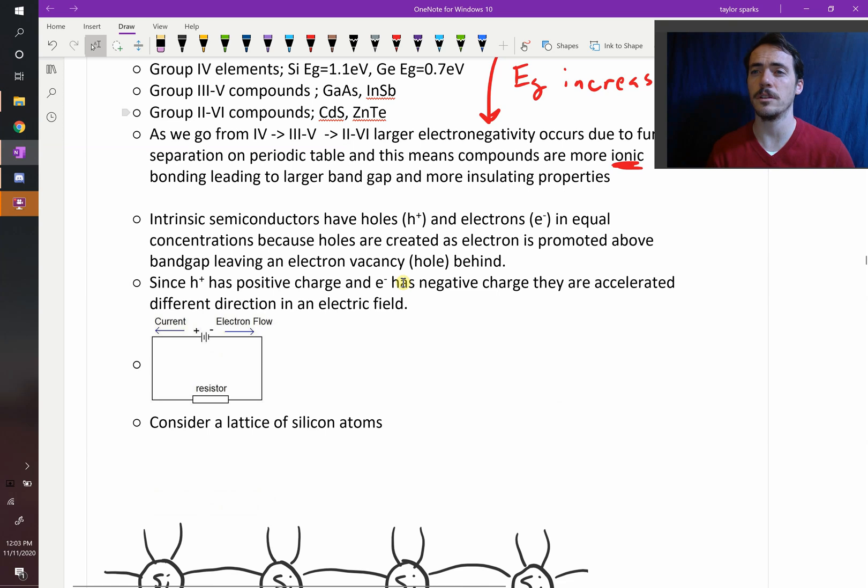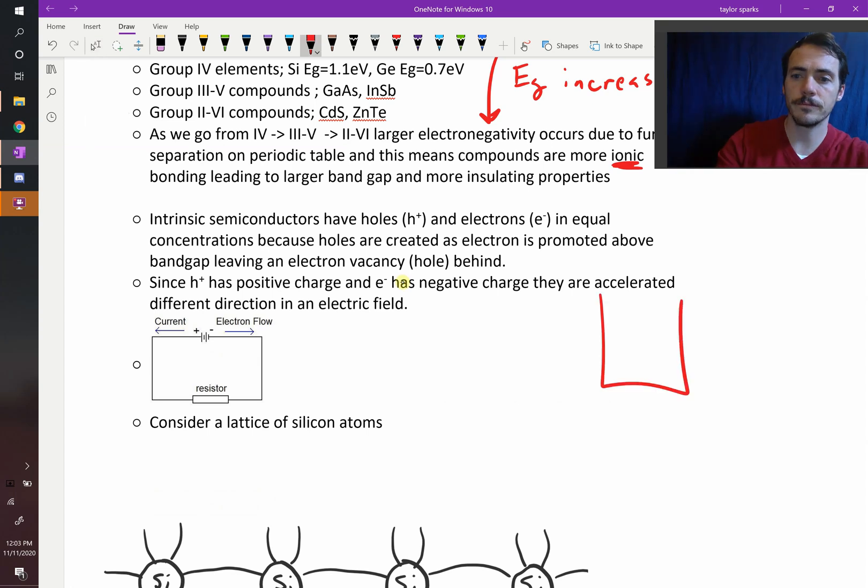Another thing to note about intrinsic semiconductors is that the concentration of your holes in the valence band and your electrons in your conduction band are equal because if we draw our picture here, the Fermi level is right smack dab in the middle for intrinsic semiconductors.